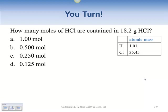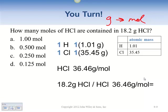How many moles of hydrochloric acid are contained in 18.2 grams? Once again our plan is to go from grams to moles. Our first step is to determine how much we have in one mole — the molecular weight is 36.46 grams per mole. We take our 18 grams and divide by 36.46 grams per mole. So 18 divided by 36 is approximately one half — 18 grams is half a mole, and 36 grams would be a full mole.